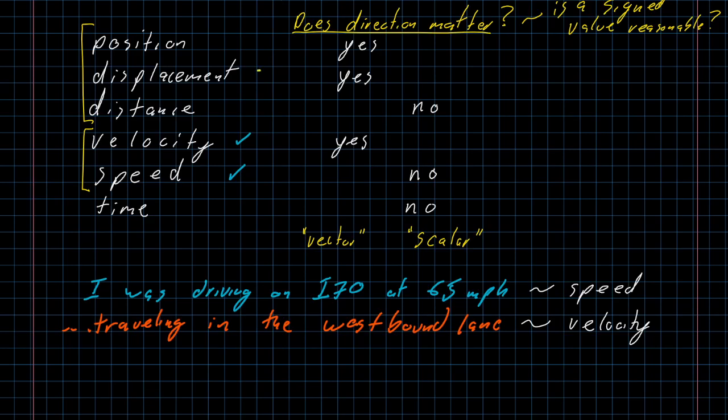We'll do the same exact thing over here talking about displacement and distance. A distance is I drove for 300 miles on Interstate 70. A displacement is I drove westward for 300 miles on Interstate 70. So, when you talk about which way you are going, you have a displacement.